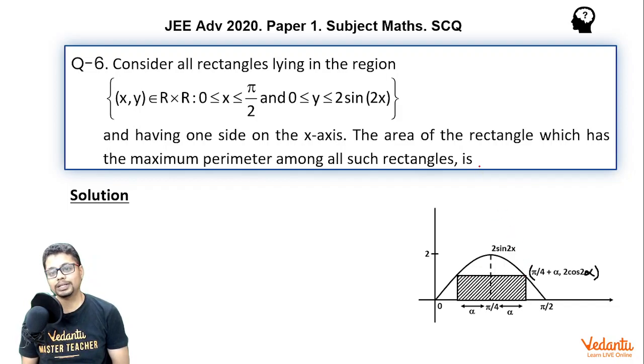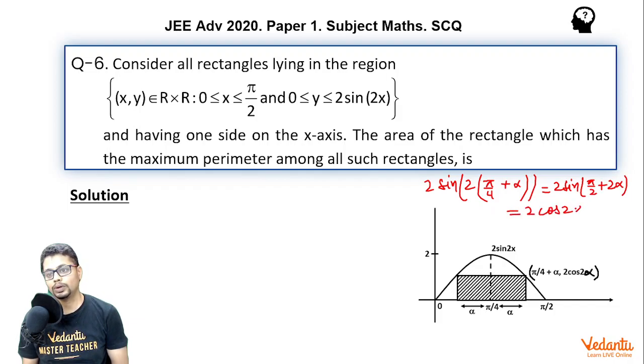So the x coordinate of this vertex would be π/4 plus α. And what about the y coordinate? Y coordinate will be 2sin(2 times the x coordinate). So basically, this becomes 2sin(π/2 + 2α), which essentially is 2cos(2α). So that means the length of the rectangle is 2α and the height or breadth would become 2cos(2α).